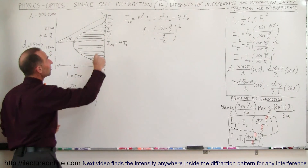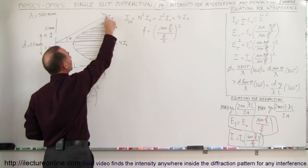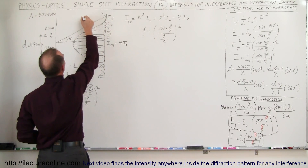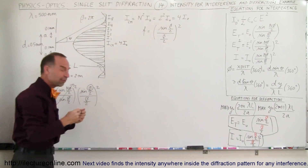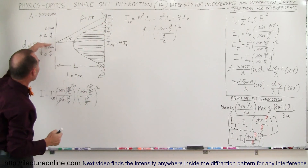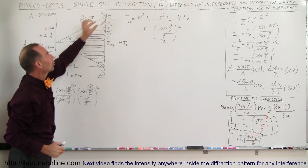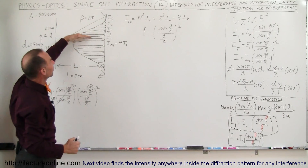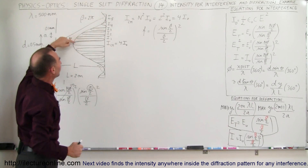Remember that at the very end, where we get the first minimum from the diffraction pattern, the phase difference is equal to two pi — that is the phase difference between the bottom and top portion of the beam as it hits that point on the screen. Since these interference patterns are equally spaced, and since there are five of them from the central maximum,